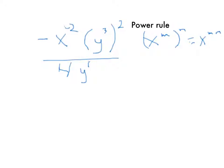Now using the power rule, which says x to the m, all to the power of n, equals x to the m times n.